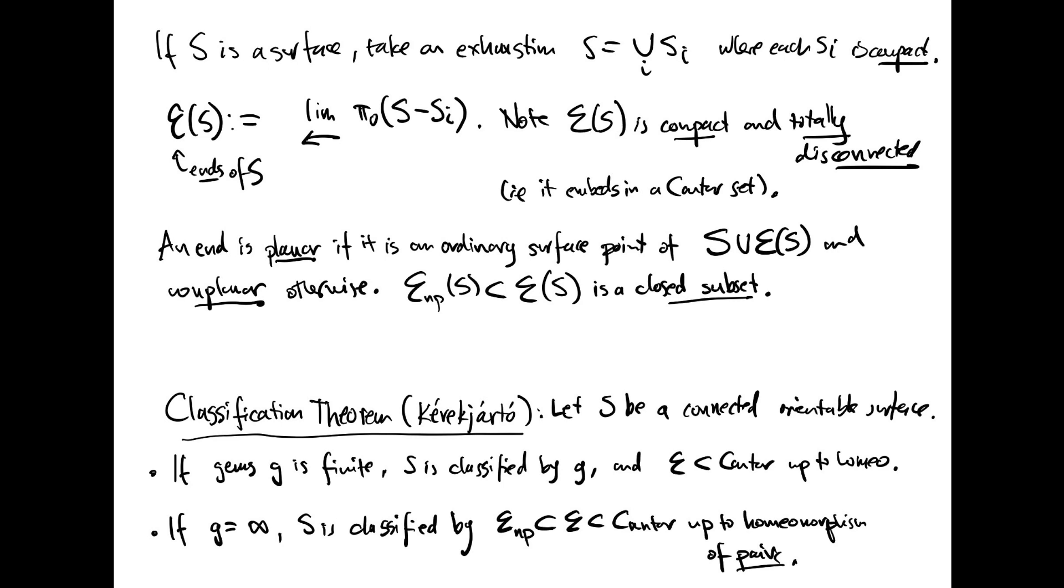Now here's the statement of the classification theorem. And remember, we're still paying attention only to surfaces which are connected and orientable. If the genus is finite, then the surface is classified by the genus g and the space of ends up to homeomorphism. In other words, the set of ends thought of as a topological space, the homeomorphism type of it, together with the genus g, is a complete invariant of the surface S.